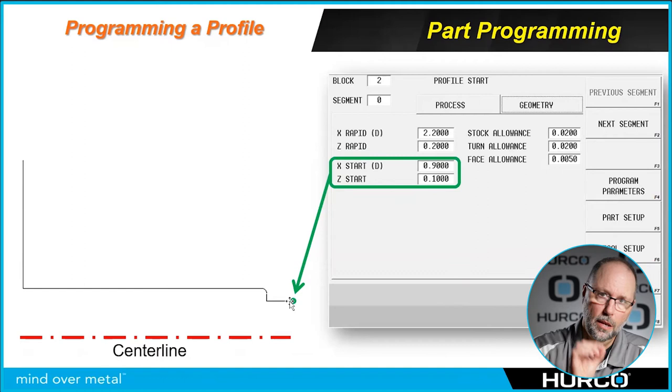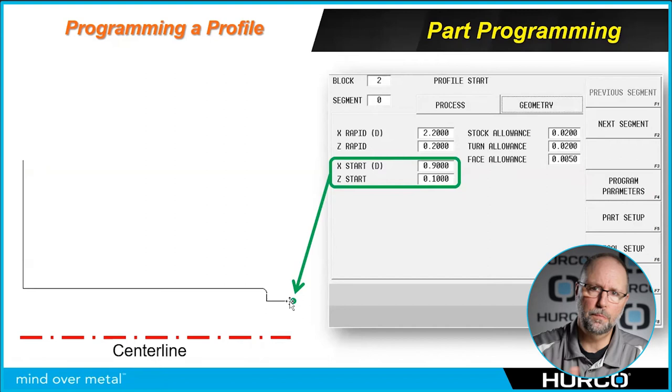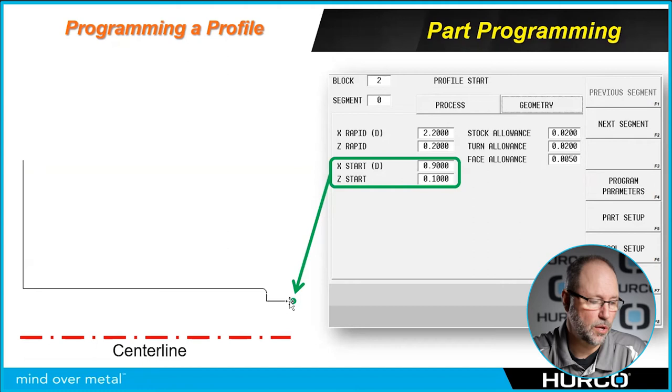If I was going to draw this, wherever I'm going to place my pen or pencil point, that is what my start position would be. From this point on, everything is going to be an end point. This is the only time we have a start point. You'll notice that when we program these, they're in segments or elements.